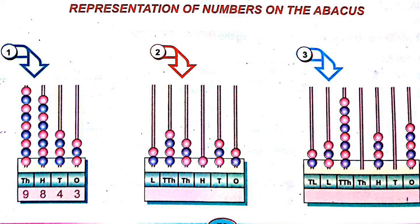Now see the representation of numbers in abacus. First, we have to know about abacus. Abacus is a type of instrument used by blind persons — because they cannot see numbers, by touching the abacus machine they can read and tell what the number is.